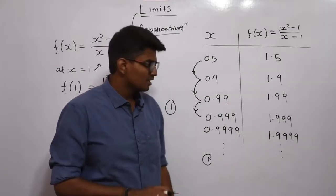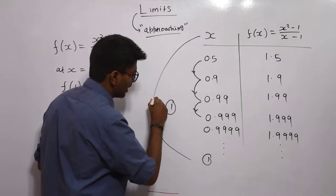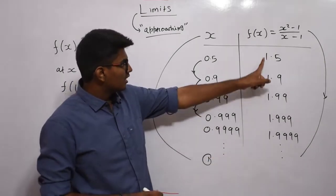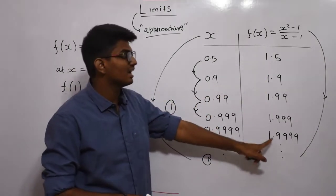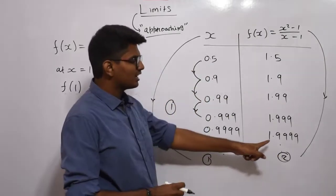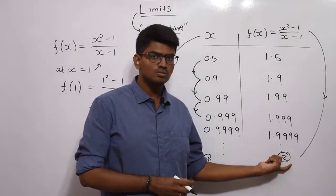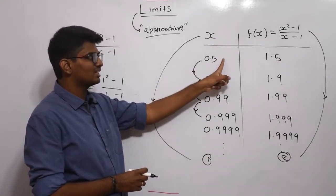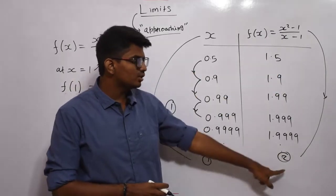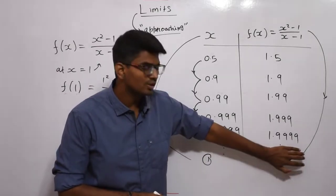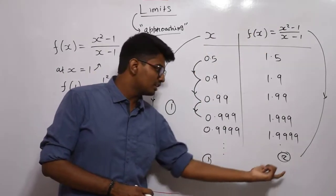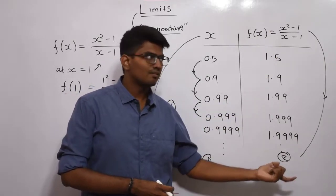As x keeps on approaching 1, my f(x) is approaching — 1.5, 1.9, 1.99, 1.9999 — which means f(x) is approaching some value. That value is 2. 1.9999 is approximately equal to 2. So when x approaches 1 from 0.5, my f(x) is approaching from 1.5 to 2. This is my limit — the limit of f(x) at x=1 is 2. We cannot say 2 is the exact value of f(x) when x=1, but 2 is the limit — it is the value which f(x) approaches when x approaches 1.